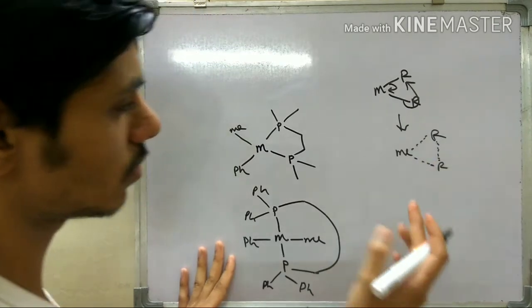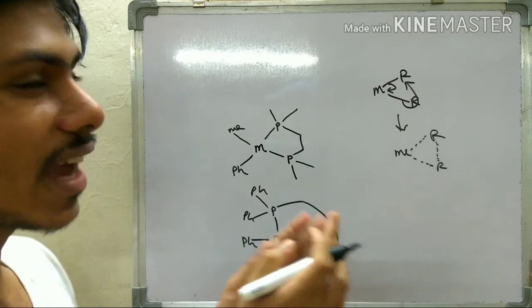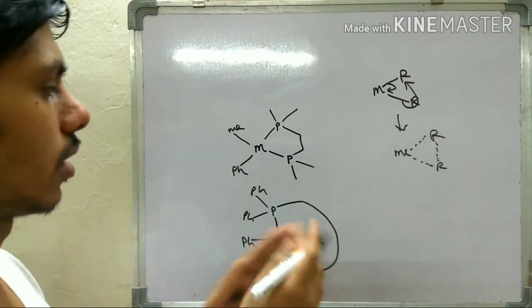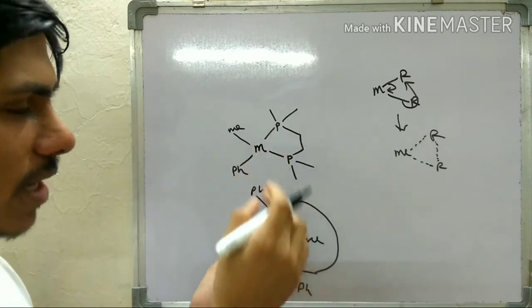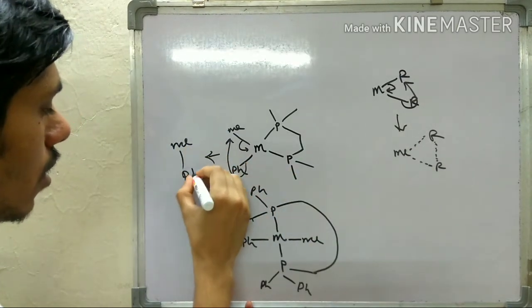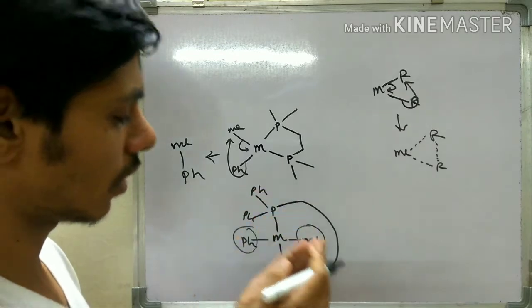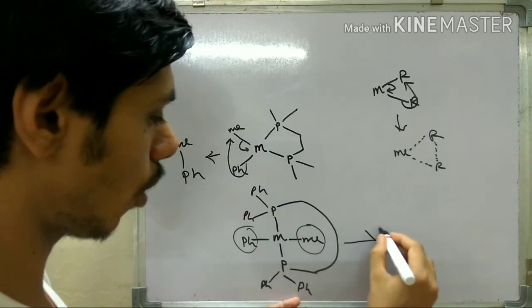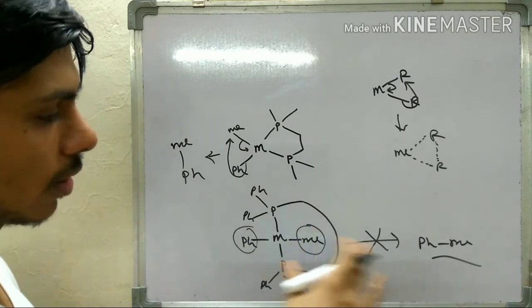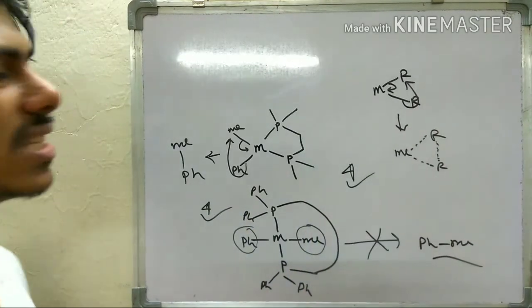Reductive elimination always goes through a concerted pathway, and for that, the two groups must be cis to each other. In the first three cases where a cis complex is formed, they are cis and can undergo reductive elimination to give toluene. But in option 4, the groups are trans to each other, so reductive elimination cannot occur and toluene will not be formed. You have to pick option 4 as the correct answer — the ligand that will not allow reductive elimination.